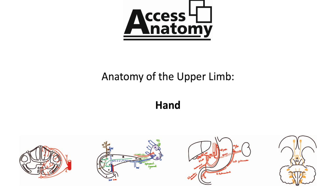The hand has three groups of bones: the carpals, the metacarpals and phalanges. There are eight carpal bones that form two transversely orientated rows, with four carpal bones in each row. The proximal row is made up of, from lateral to medial: scaphoid, lunate, triquetrum and pisiform. The distal row is made up of, from lateral to medial: trapezium, trapezoid, capitate and finally the hamate bone.